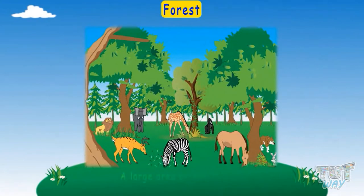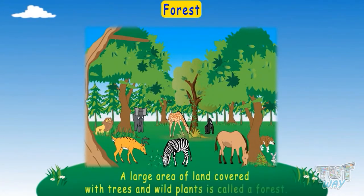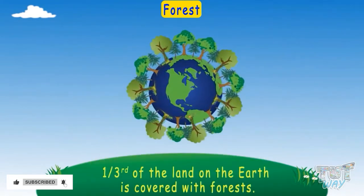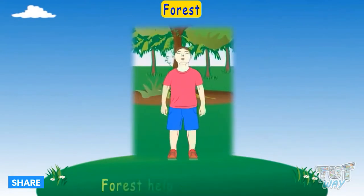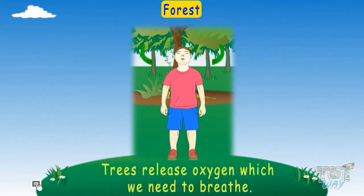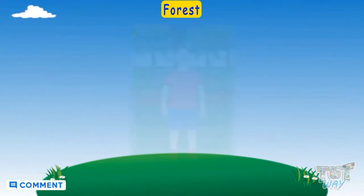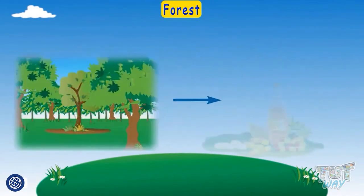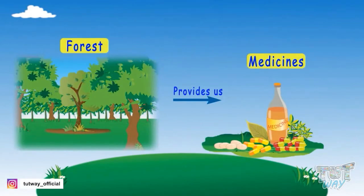Forests: a large area of land covered with trees and wild plants is called a forest. One-third of the land on Earth is covered with forest. Forests help us breathe, as trees release oxygen which we need. A lot of people live in forests too. Forests also provide us with medicines, as all medicines are made from various plants and trees.